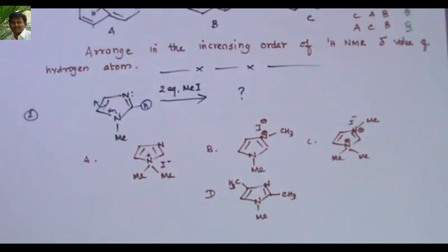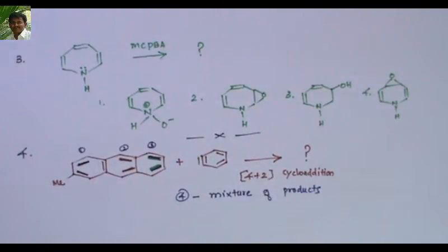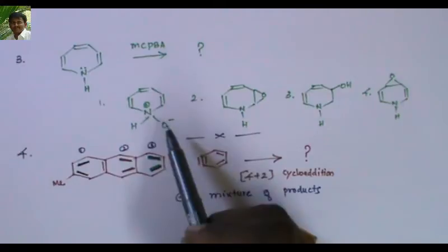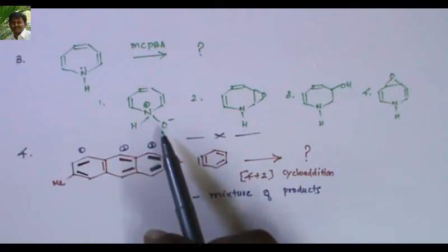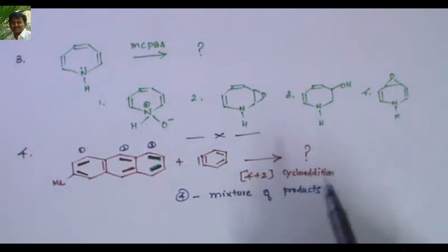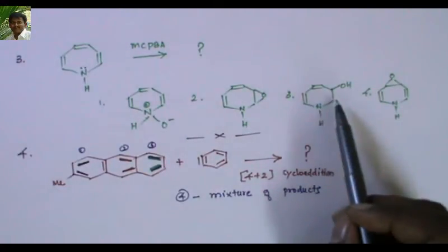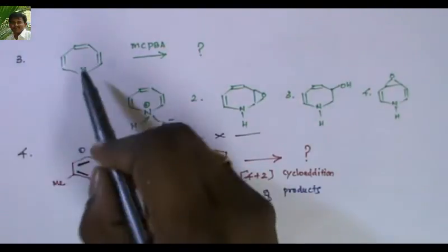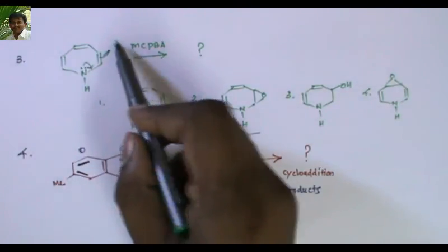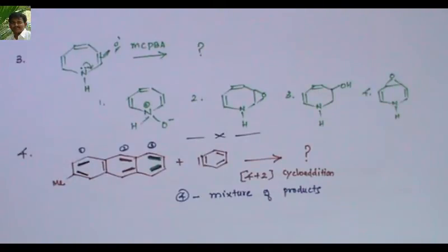Third problem: if this compound is treated with meta-chloroperoxybenzoic acid (mCPBA), what will be the product? Option one: nitrogen gets oxidized to an N-oxide. Option two: epoxidation takes place on one double bond. Option three: hydroxylation — the electrophilic oxygen is attacked to give a specific compound. Option four: epoxidation takes place on another double bond. Which one is correct?